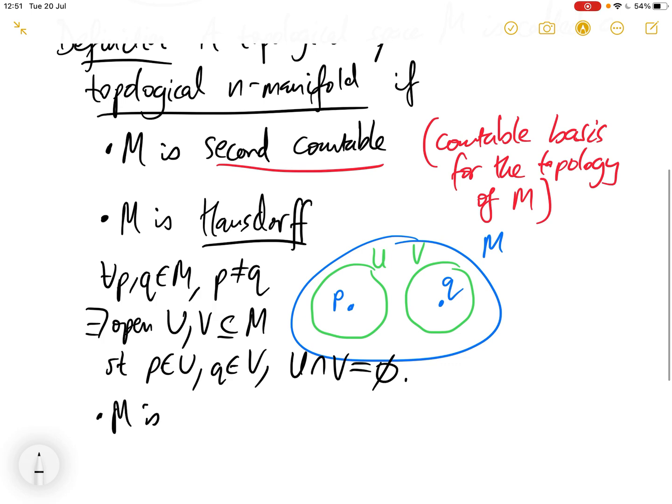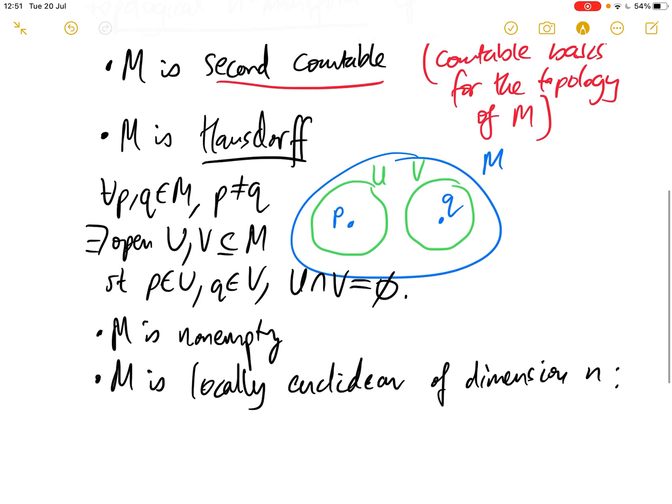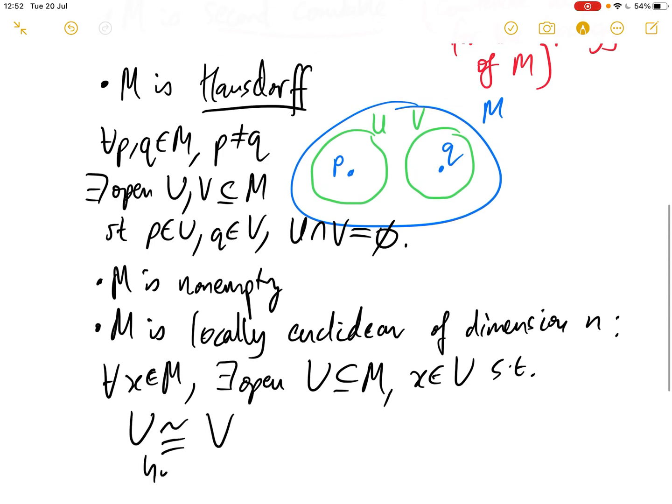We also require M is non-empty, and we require that M is locally Euclidean of dimension n. This is the condition that encodes that the space locally looks like R^n. More formally, we can say: for every point x in M, there is an open neighborhood U containing x such that U is homeomorphic to an open subset V in R^n.